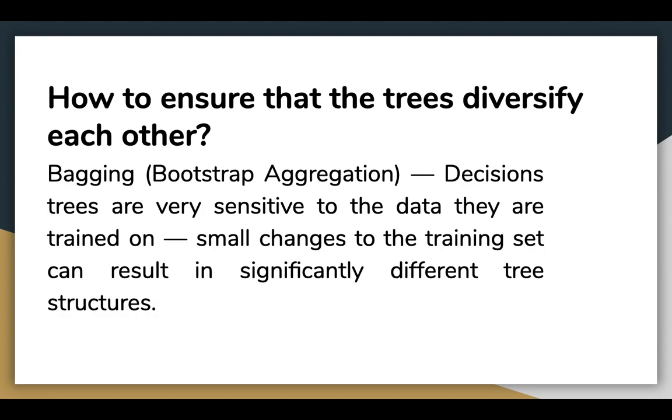Bootstrapping the data and using the aggregate to make a decision is known as bagging. Random Forest takes advantage of this by allowing each individual tree to randomly sample from the dataset with replacement, resulting in different trees.